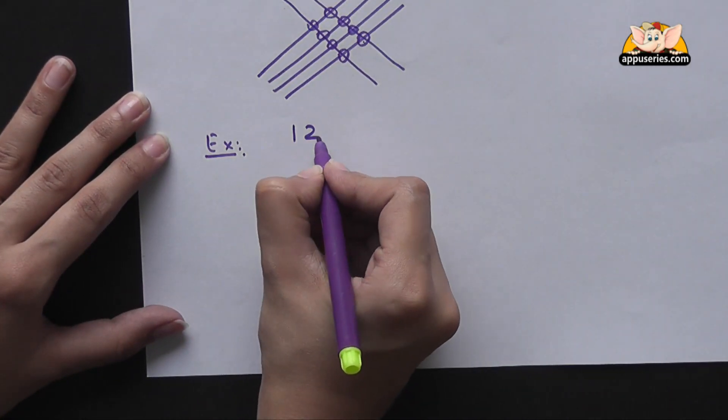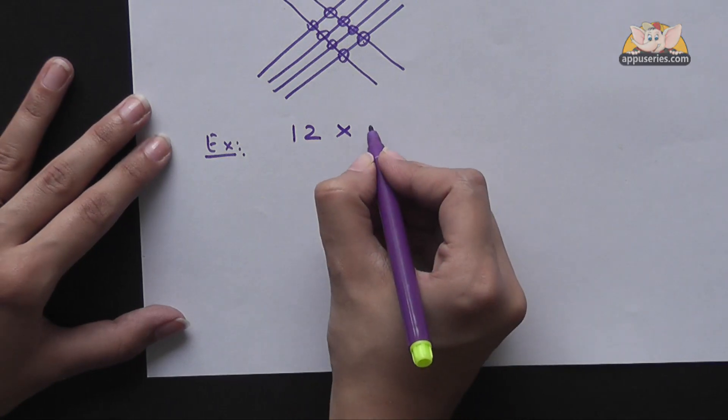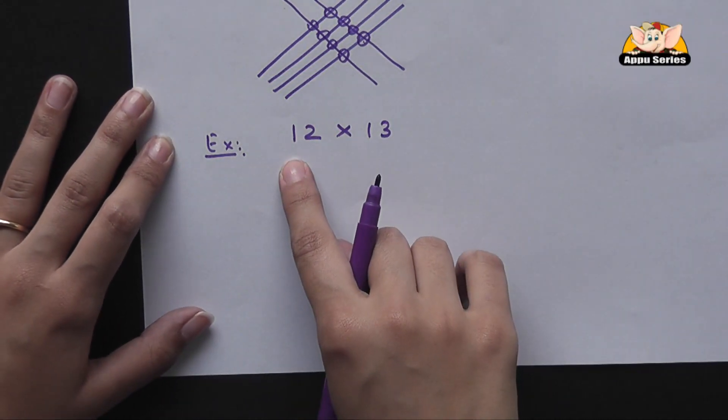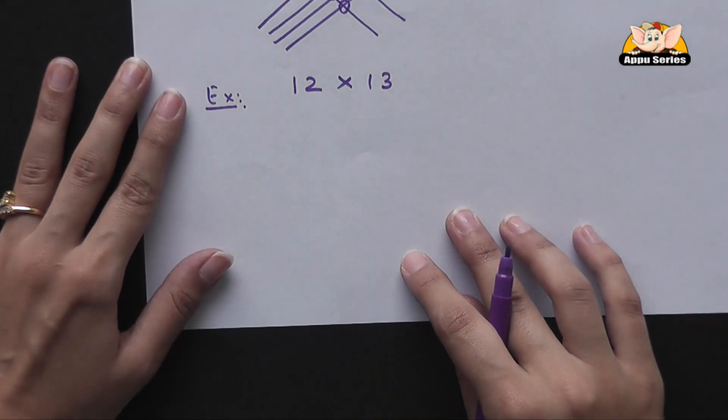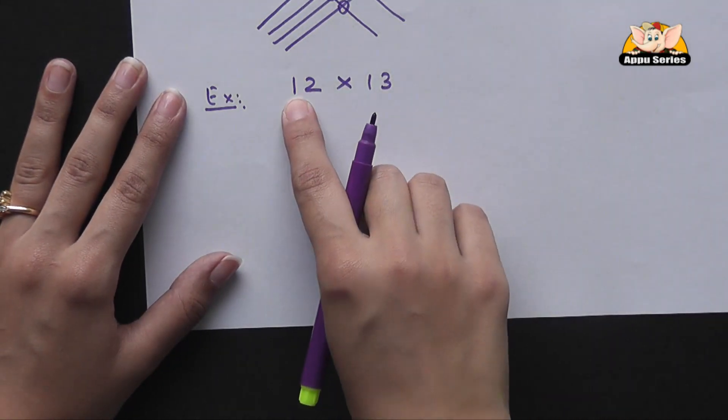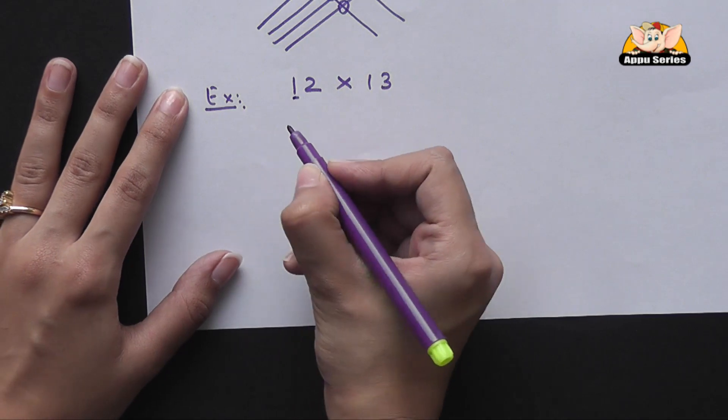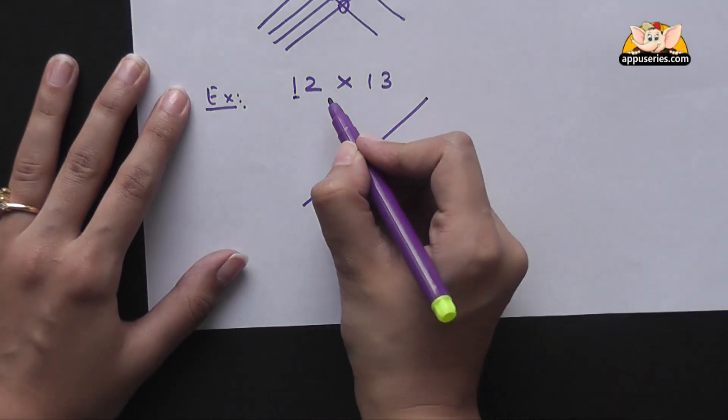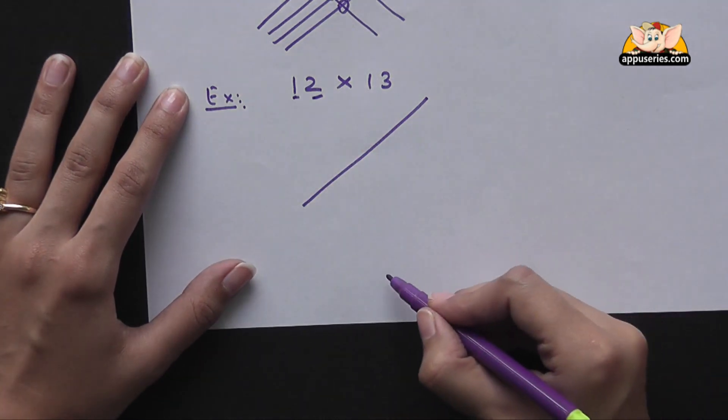Say 12 x 13. Now we have 2 digits on either side. First we will take this one and draw 1 line diagonally. And for this 2, we will draw 2 lines here.